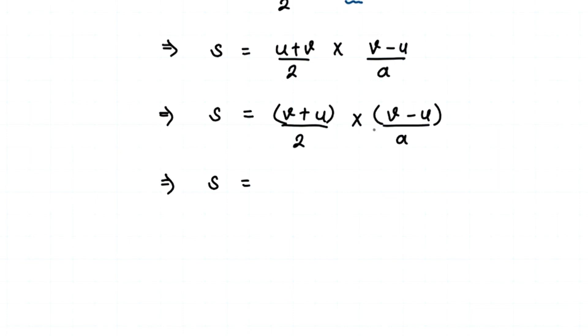Which is a squared minus b squared. So we can write v plus u times v minus u as v squared minus u squared divided by, in the denominator we have 2 times a, which is going to give us 2a.